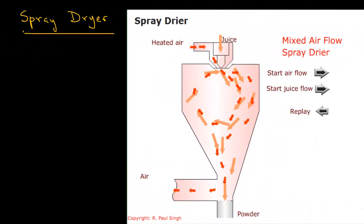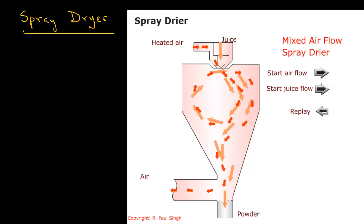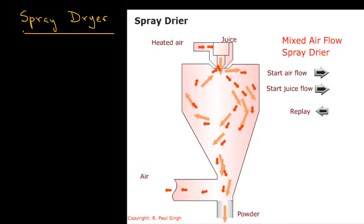Spray dryers are commonly used to make food powders. For example, we can convert milk into milk powder. In a spray dryer, the liquid food is converted into a spray at the very top of the chamber by using spray nozzles and also there is an entry point for the heated air.